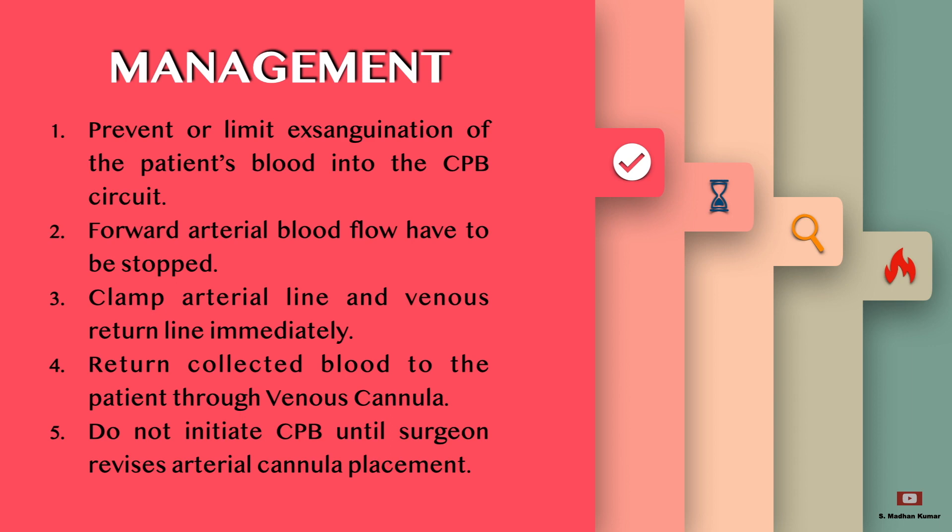Prevent or limit exsanguination of the patient's blood into the CPB circuit by clamping. Forward arterial blood flow has to be stopped immediately. Clamp the arterial line and venous line immediately, then return the collected blood to the patient through the venous cannula.